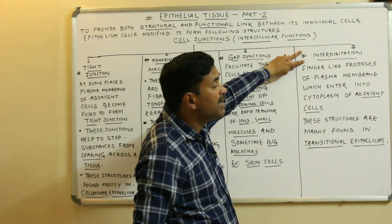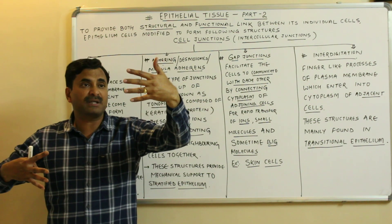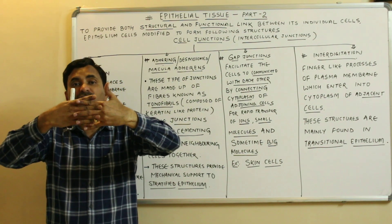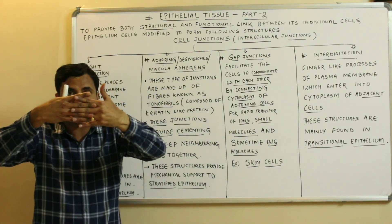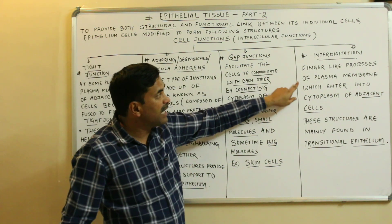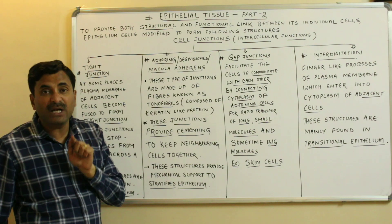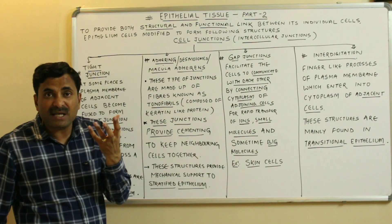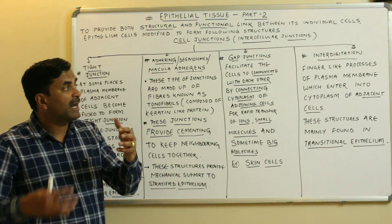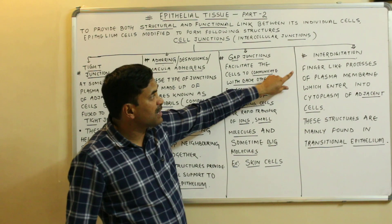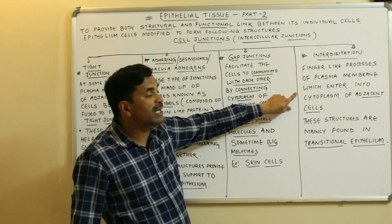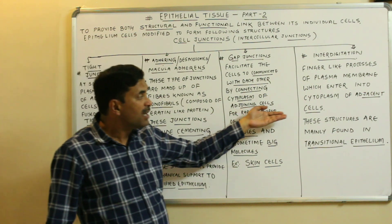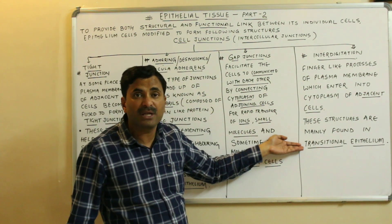The last type is interdigitation. Interdigitation is like interlocking the fingers of both hands together — finger-like processes of the plasma membrane that enter into the cytoplasm of the adjacent cell. These interdigitations are found in the transitional epithelium.